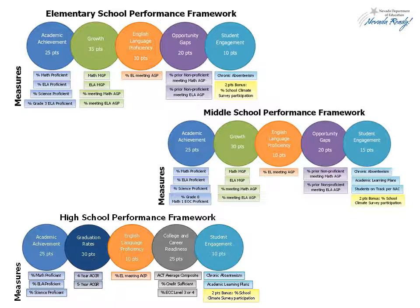The performance indicators and the measures that contribute to them are customized for the elementary, middle, and high school levels. Points available for each measure and indicator may vary between school level frameworks. However, each framework has a total of 100 points possible.